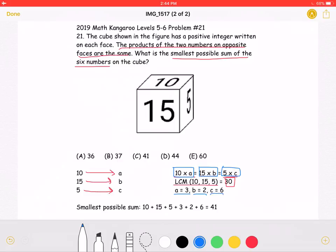Now, all we have to do is add all these numbers together. 10 plus 15 plus 5 plus 3 plus 2 plus 6 is equal to 41. The smallest possible sum is 41, which is answer choice C.